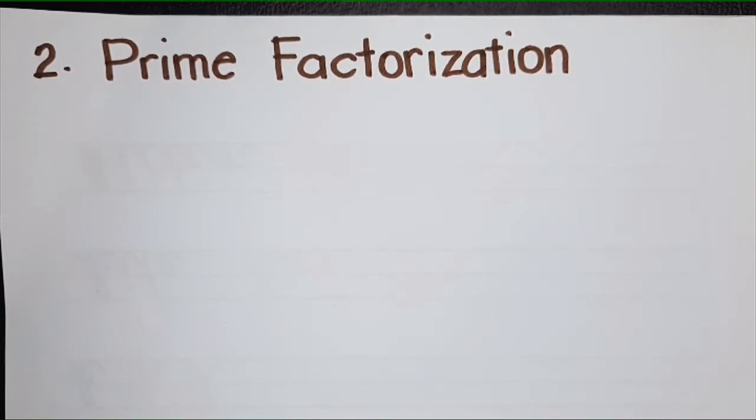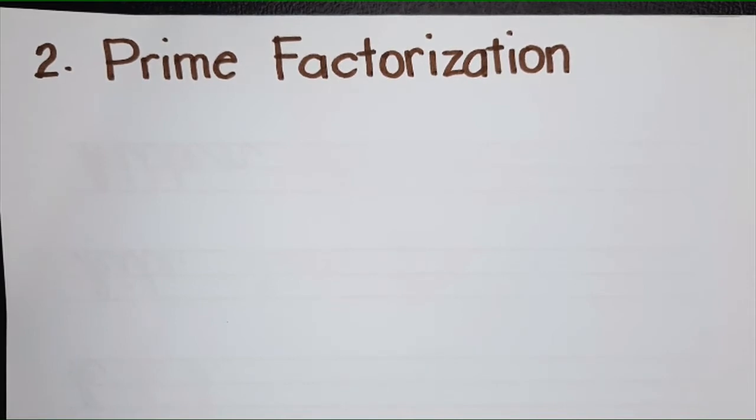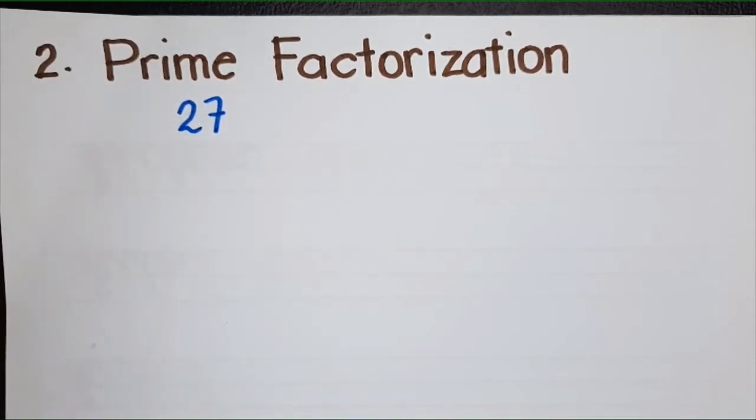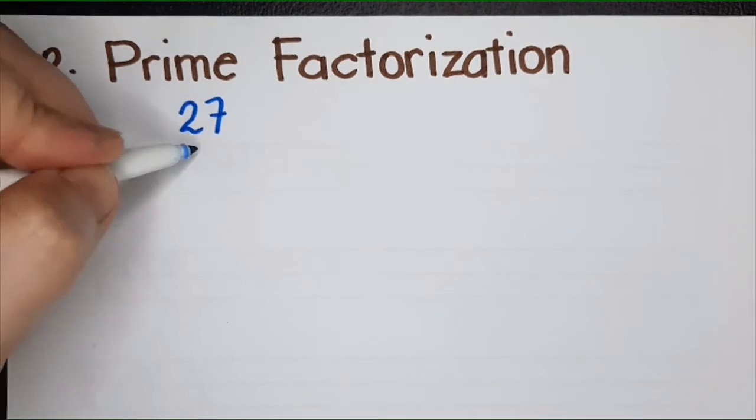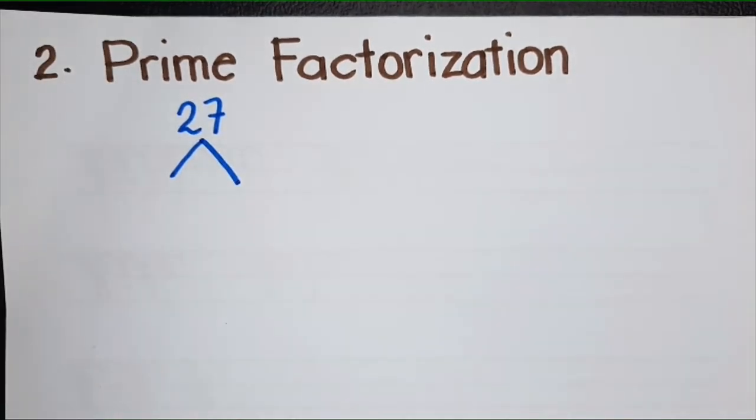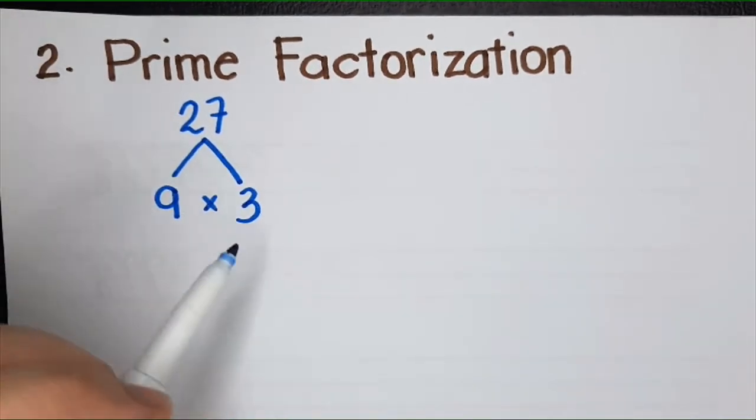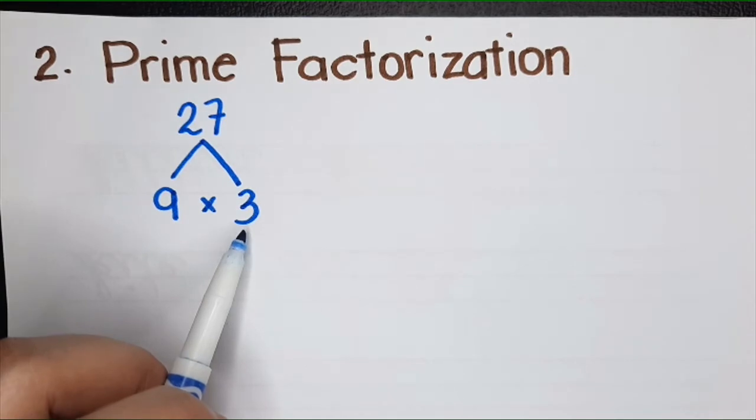What is a prime number? A prime number has factors one and itself. For example, 2. The factors of 2 are 1 and 2. Let's start with 27. This is how you do prime factorization: think of two numbers when multiplied the answer is 27. It is 9 times 3, right? You stop when it's already a prime number, so